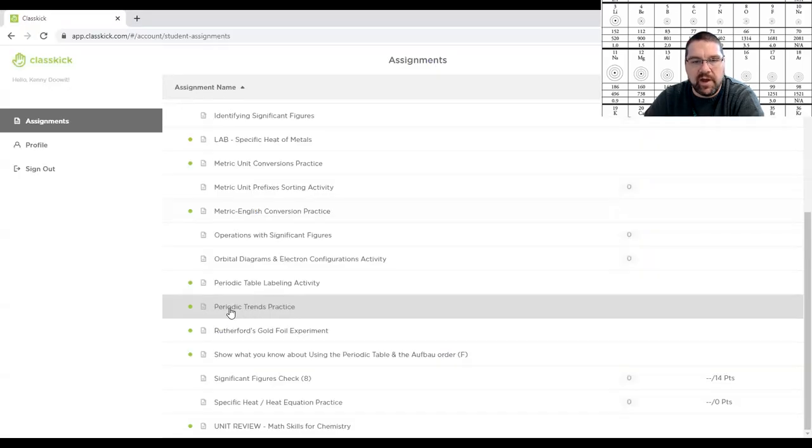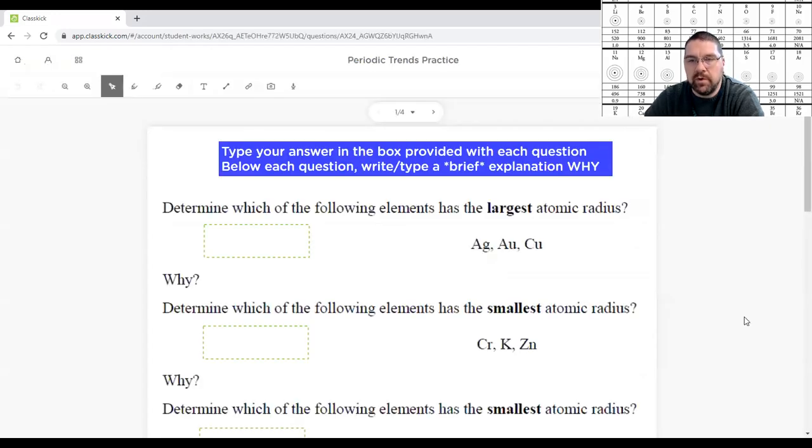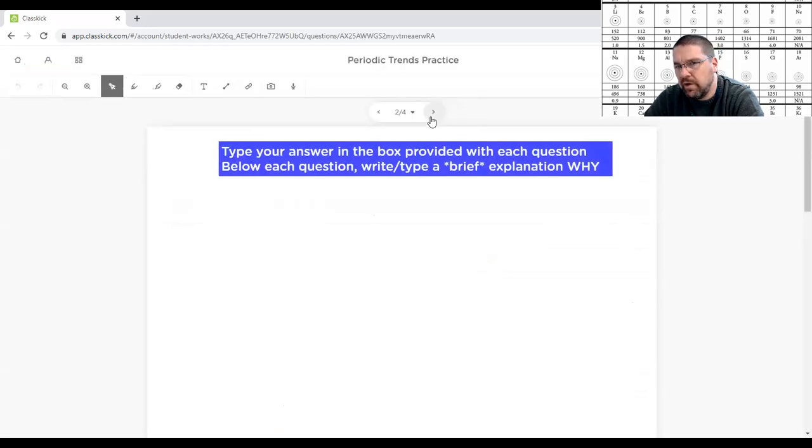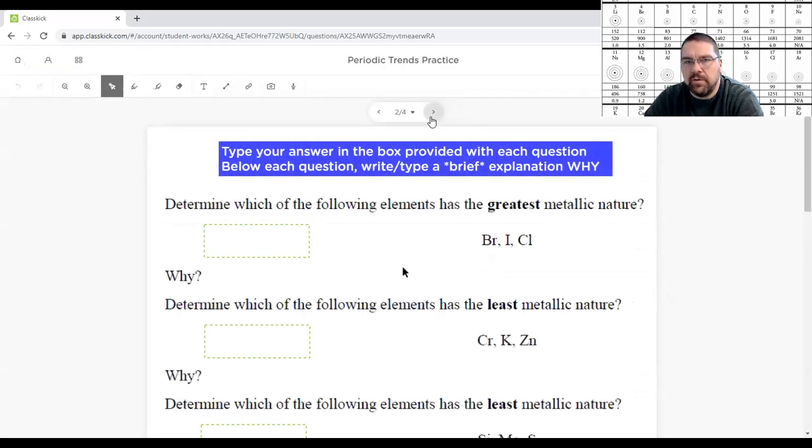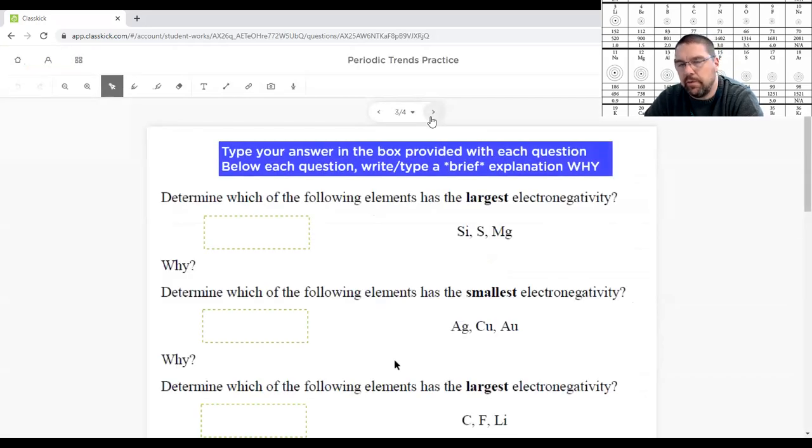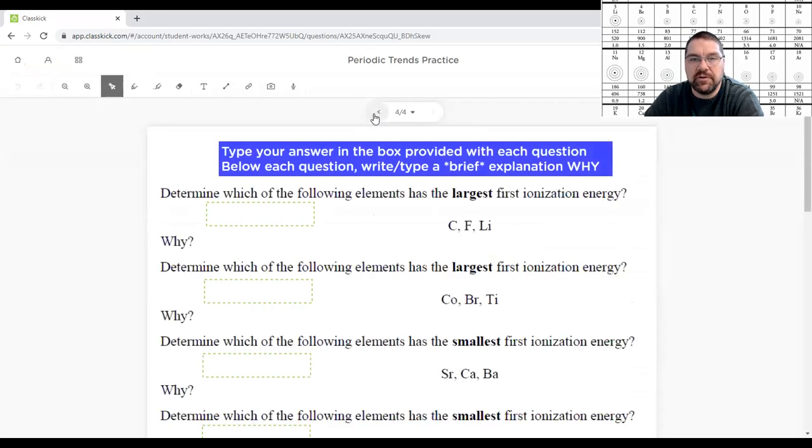So now if we go over to ClassKick, when you log into ClassKick and you scroll down, there should be an activity called Periodic Trends Practice. Click into that and you're going to have four pages total. Each page is going to focus on a different trend. The first page is atomic radius, the second one's metallic nature, then electronegativity, then ionization energy.